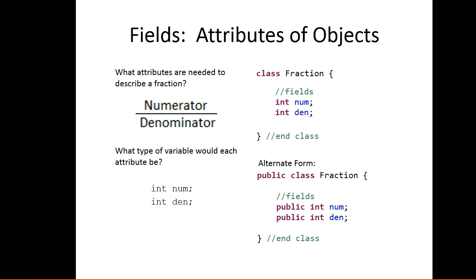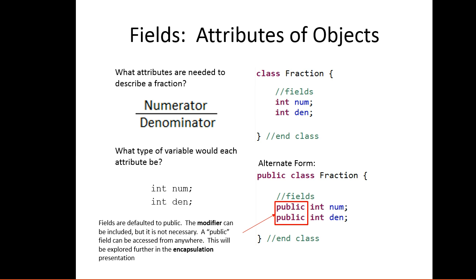You might see this class written as below, where the fields are defaulted to public. What that means is anyone can see them. The word public is what we call a modifier. We're going to explore how modifiers affect your program - public, private, protected - in a later presentation which addresses encapsulation. Likewise, classes can also be defined as public, private, protected, but they're defaulted to public. If something is public, you don't have to write it down.